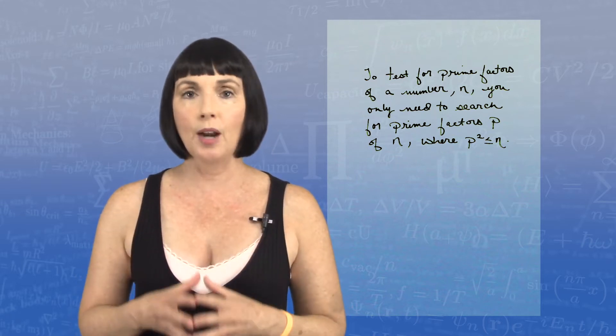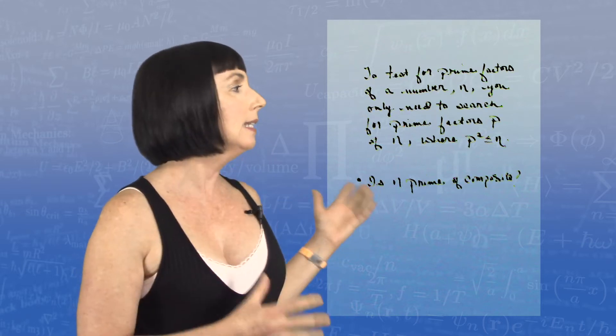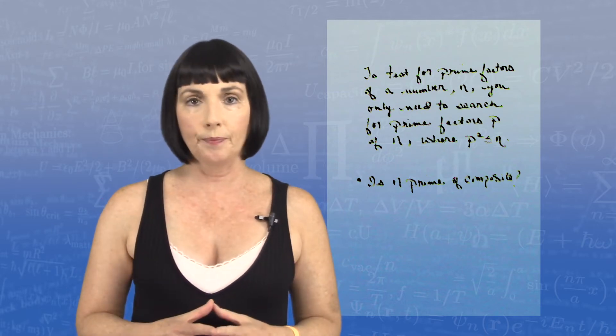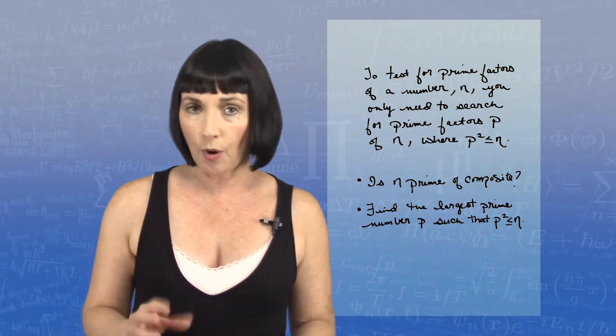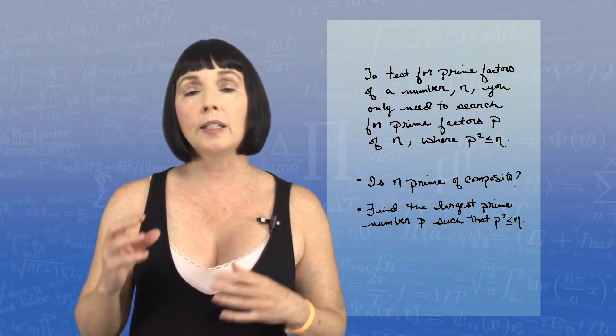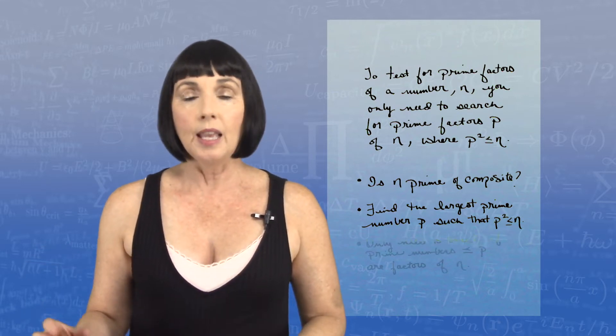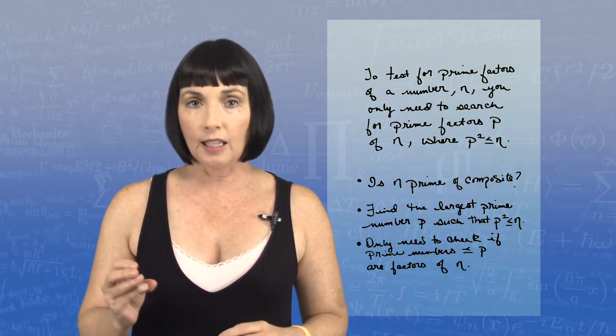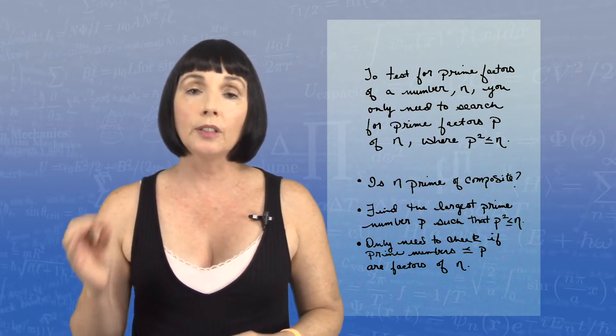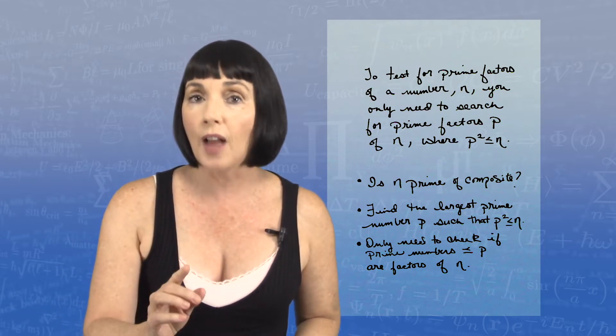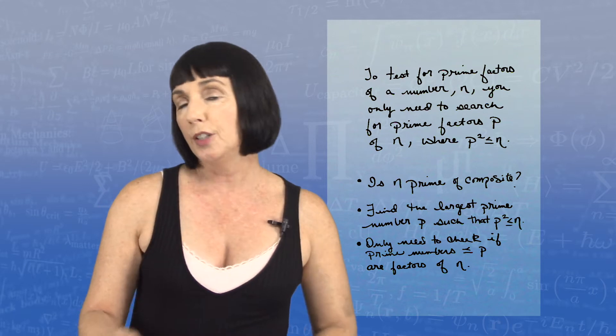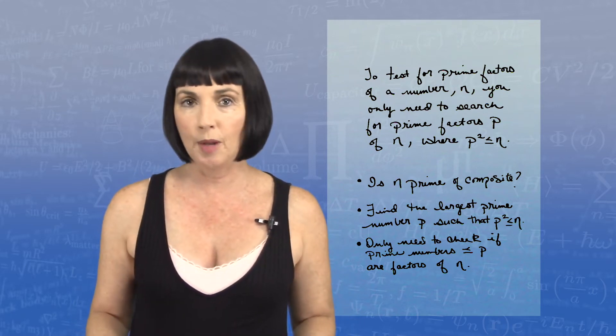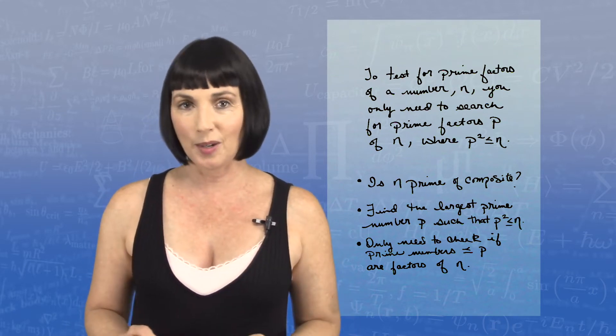Here's how you're going to use it. You'll have a number n, and you're trying to figure out, is n prime or composite? So find the largest prime number p such that p squared is less than or equal to n. Then you only need to check if the prime numbers that are less than or equal to p are factors of your number n. You don't have to check any other prime numbers. So let's do an example and see how this works.